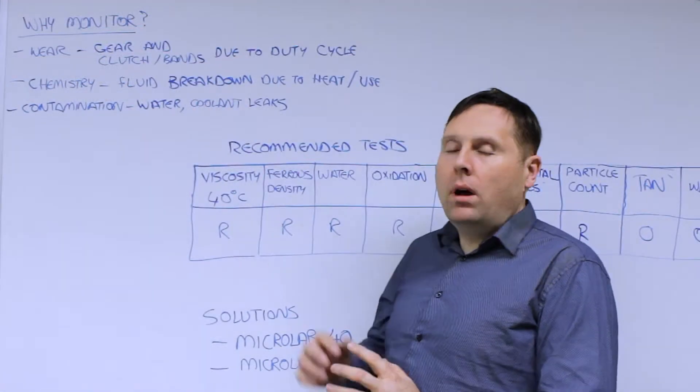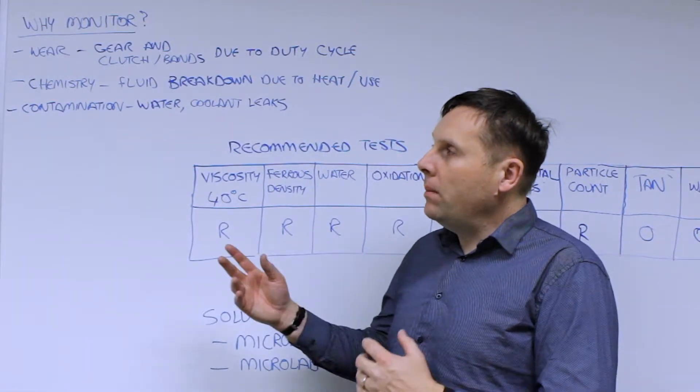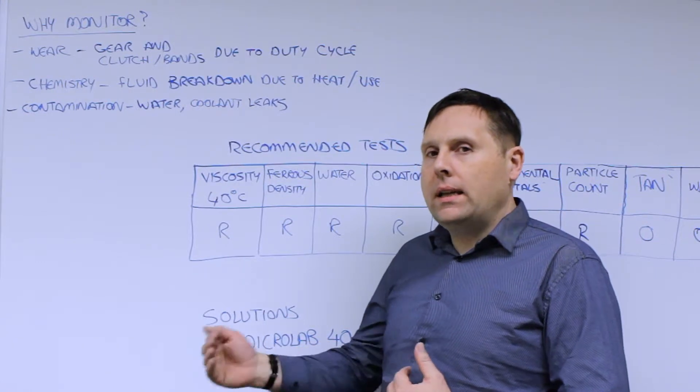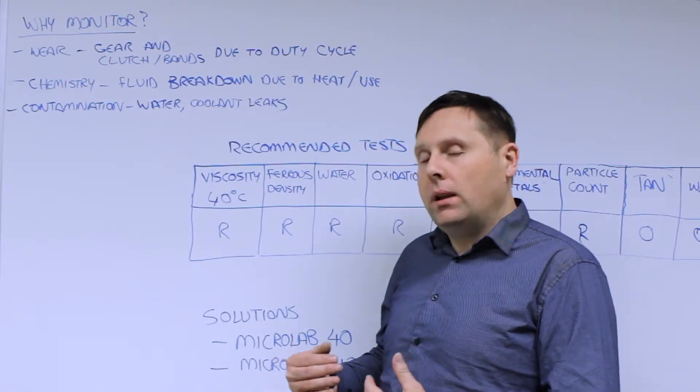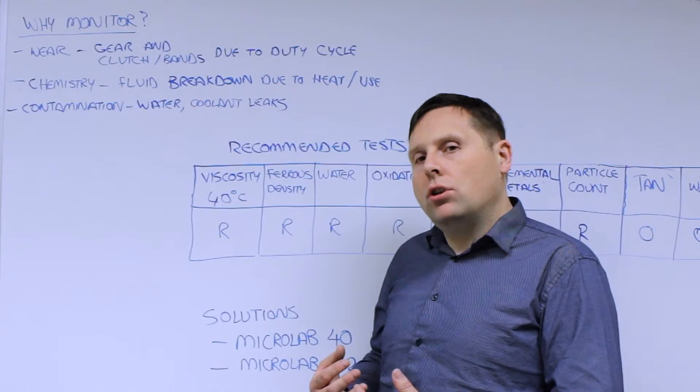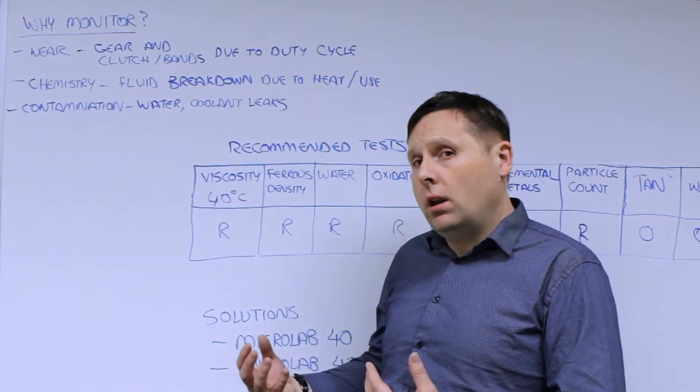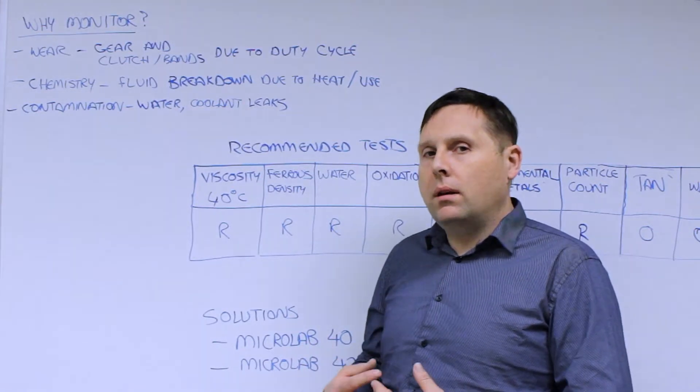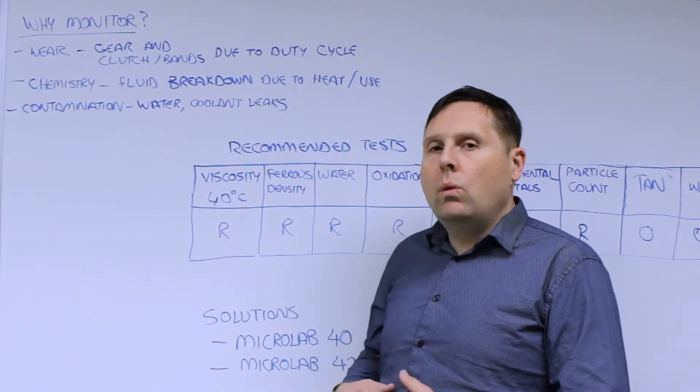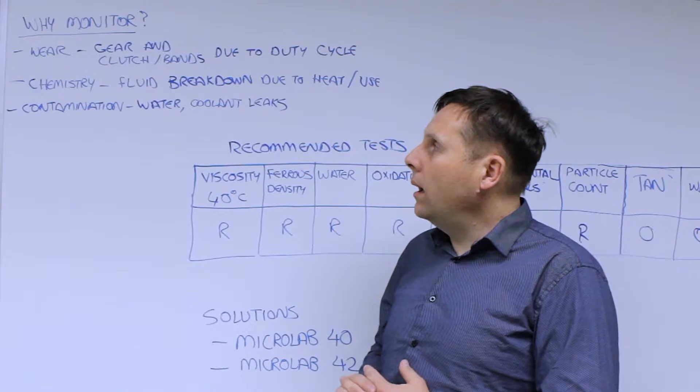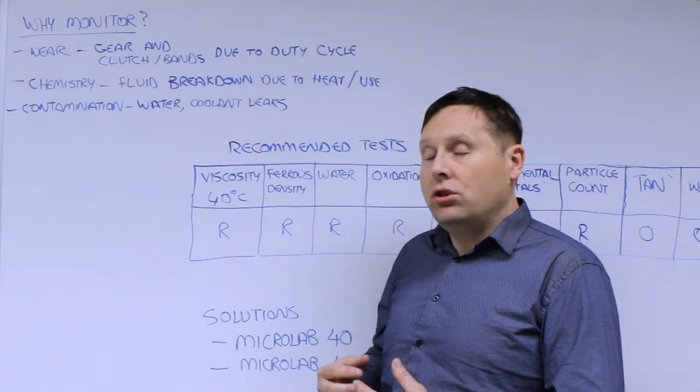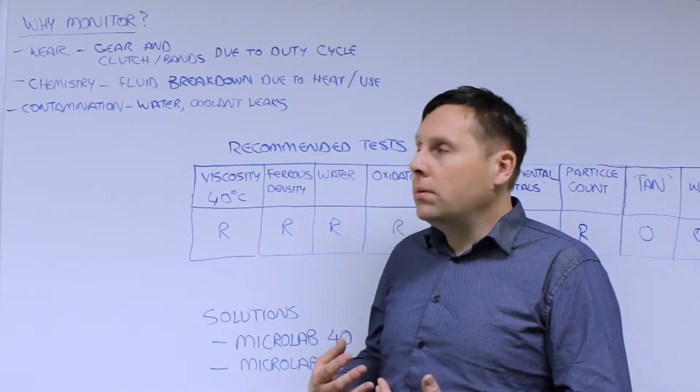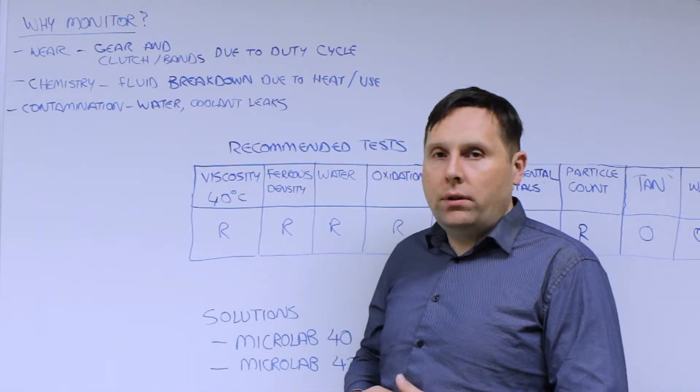So why do we monitor transmission fluids? As we mentioned earlier, a lot of these fluids are factory-fill and there's an extended drain interval. Typically, highway applications are between 50 and 100,000 miles or kilometers before a fluid change. For off-highway, it can be based on duty cycle. But why we worry about fluid in a transmission, it's because there can be a series of things that occur that can interrupt the condition and operation of the transmission.